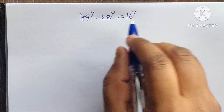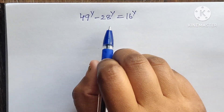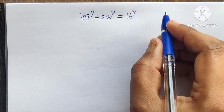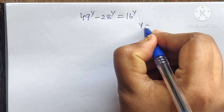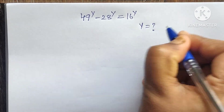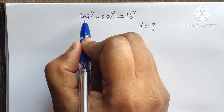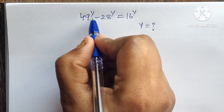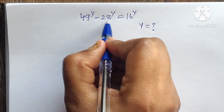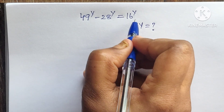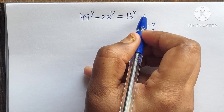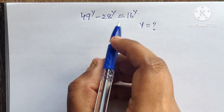Hello everyone, welcome back to my channel. Here we have one problem. In this problem we have to find the y value. So how do we solve this: 49 to the power of y minus 28 to the power of y equals 16 to the power of y.